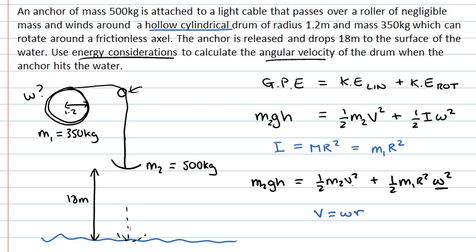And as we want to get rid of this V, we want to substitute in to this expression here. So that gives us M2gh equals a half M2 omega squared R squared plus a half times M1 omega squared R squared.